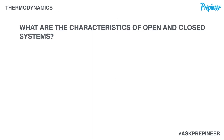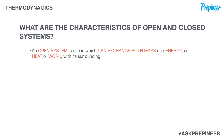Back to our slide highlighting the characteristics of open and closed systems, let's highlight some key points that we must remember — both for this conceptual problem we're working and for the quantitative problems we will encounter in the thermodynamics section of the exam. An open system is one that can exchange both mass and energy.